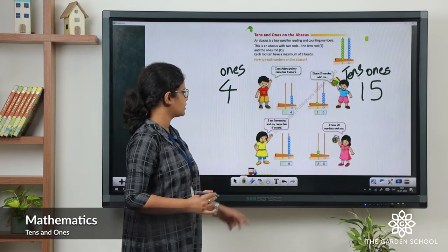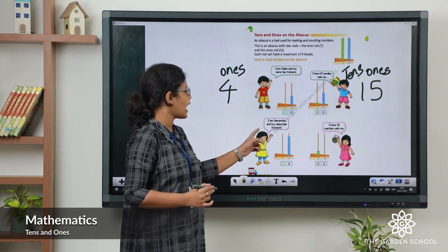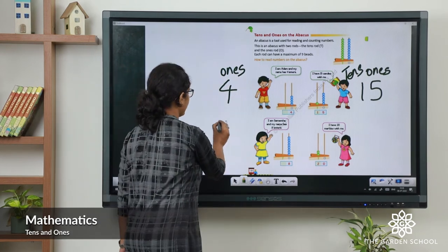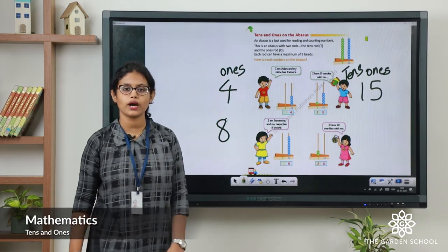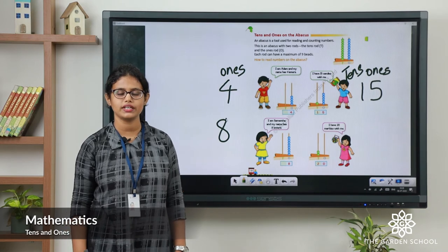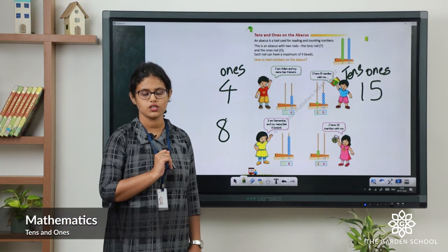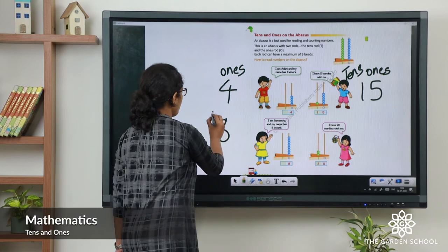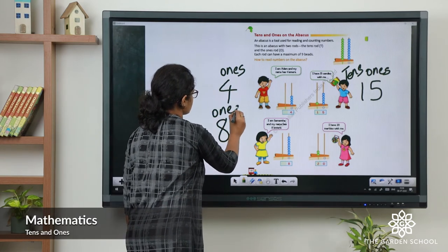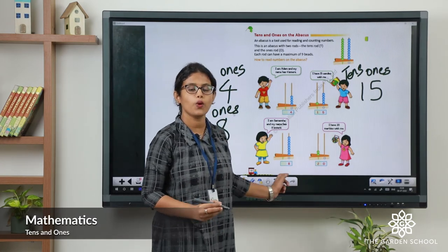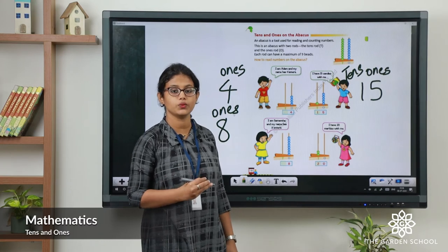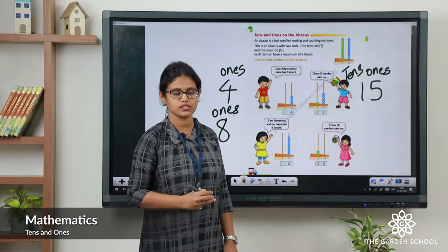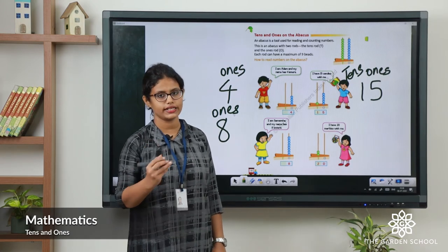See the next one. I am Samantha and my name has eight letters. Eight is a one-digit number. The place value of eight is ones. So in ones place we draw 8 beads. Eight ones makes eight.